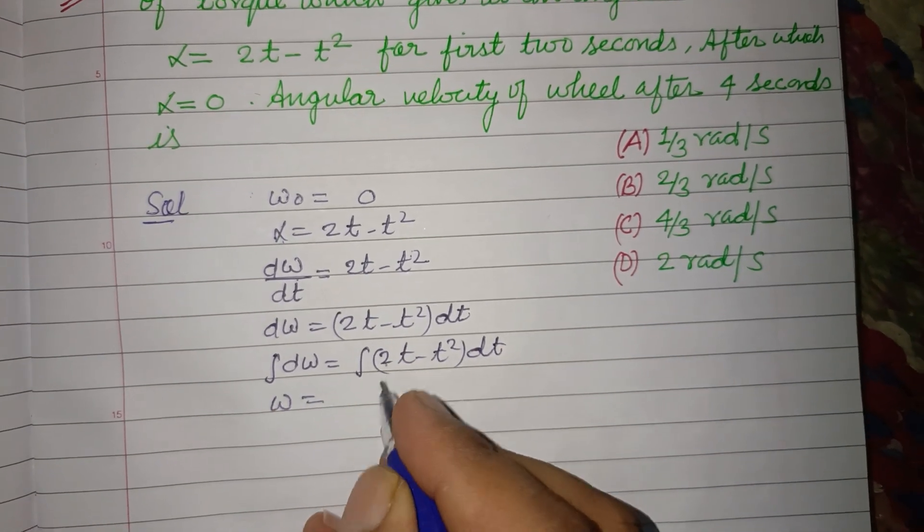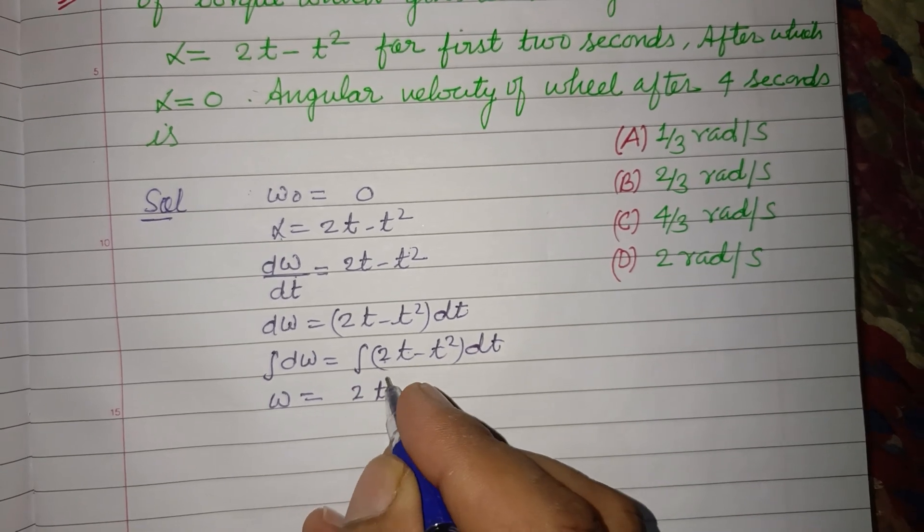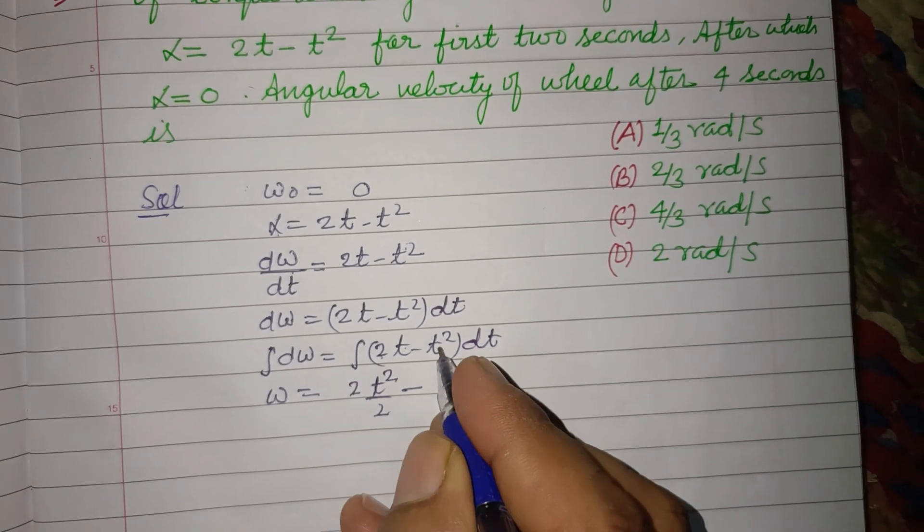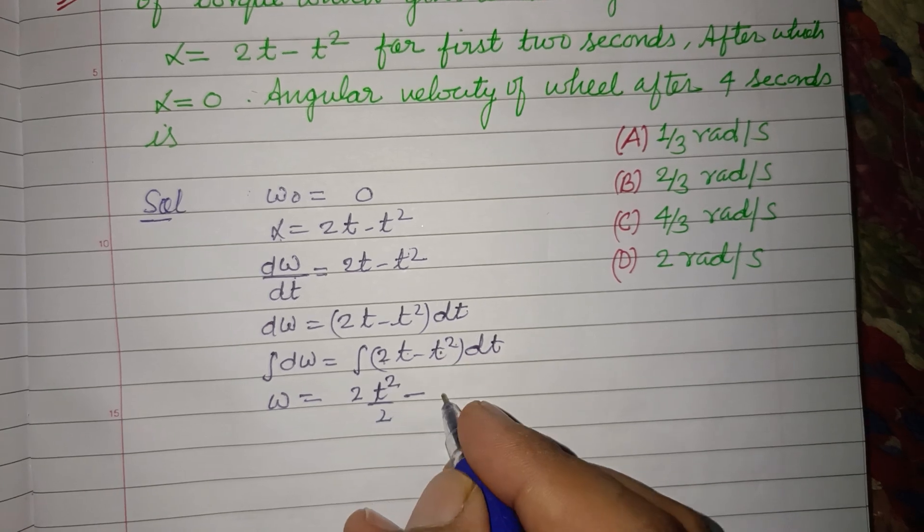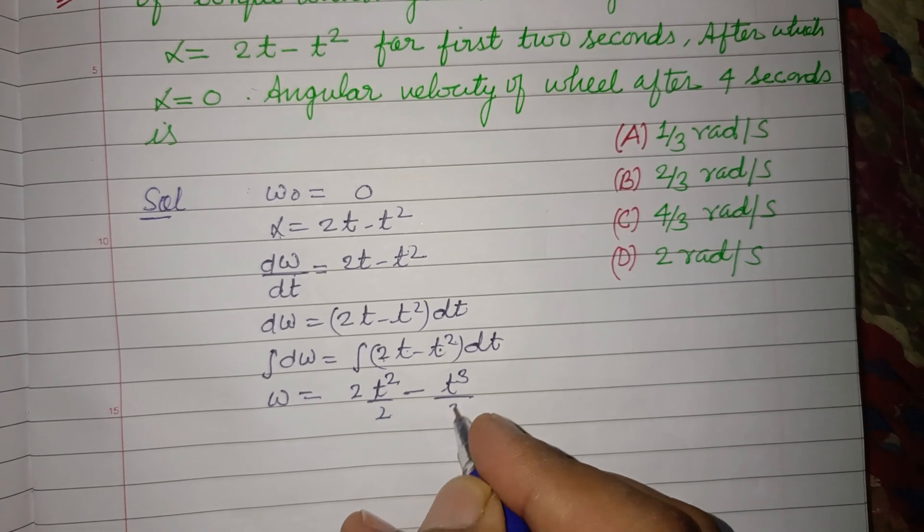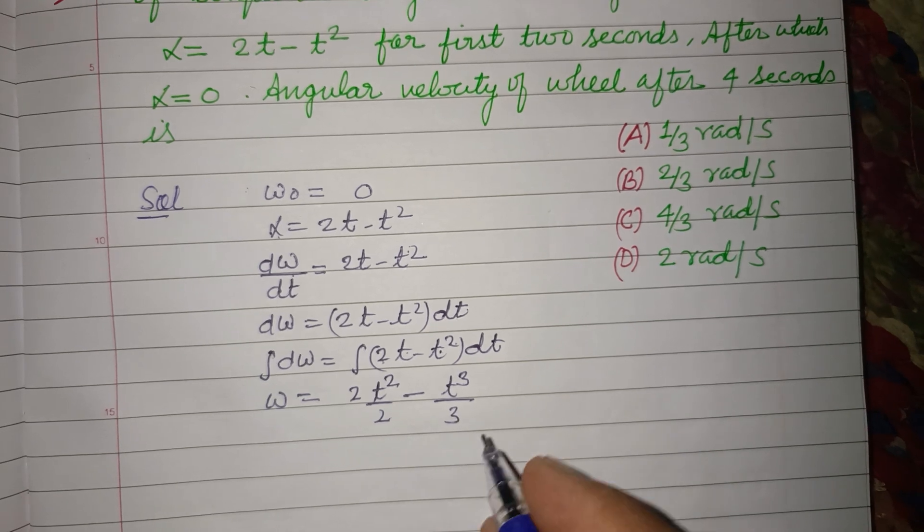This becomes ω, and the integration of 2t is t², and integration of t² is t³/3. We add 1 to the power and divide by the same.